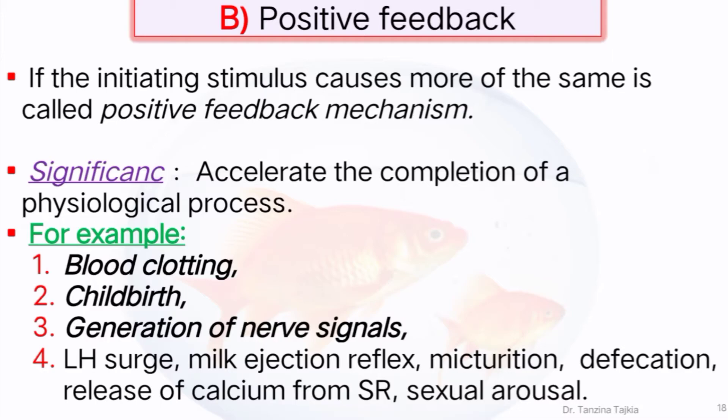The significance of positive feedback is to accelerate the completion of a physiological process. Examples of positive feedback mechanisms are: blood clotting, childbirth, generation of nerve signals, LH surge, milk ejection reflex, micturition, defecation, release of calcium from SR, and sexual arousal.